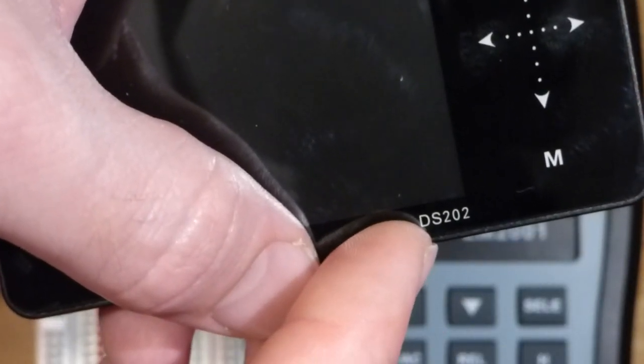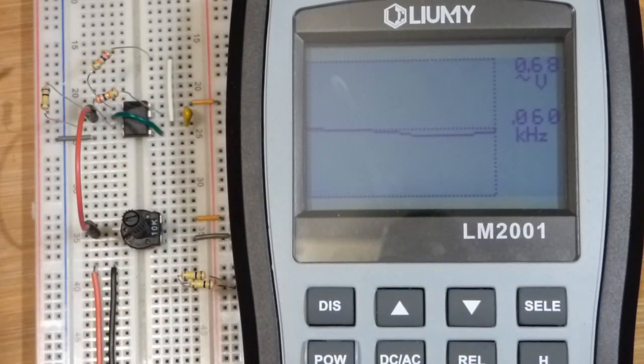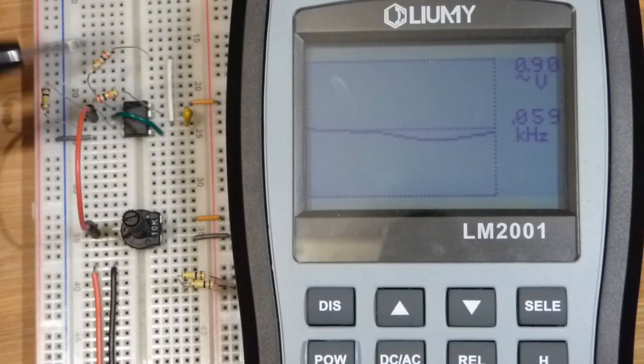Alright. So now I just want to quickly mention, in the last clip we used my DS202 oscilloscope. Now we're coming to the Liumi LM2001. Because this is actually the whole reason for this video. I made this circuit to test out this meter.